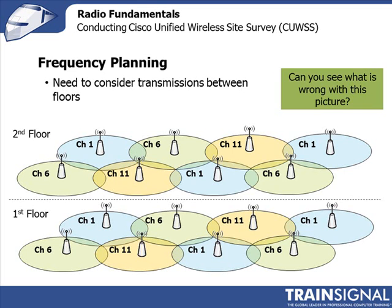When deploying access points on different floors, you need to think about not only what the adjoining channel is for surrounding access points on the same floor, but also what channel you're using for the access point on the floor below and the floor above. Spillover between adjoining floors also depends on the composition of the floor and ceiling.